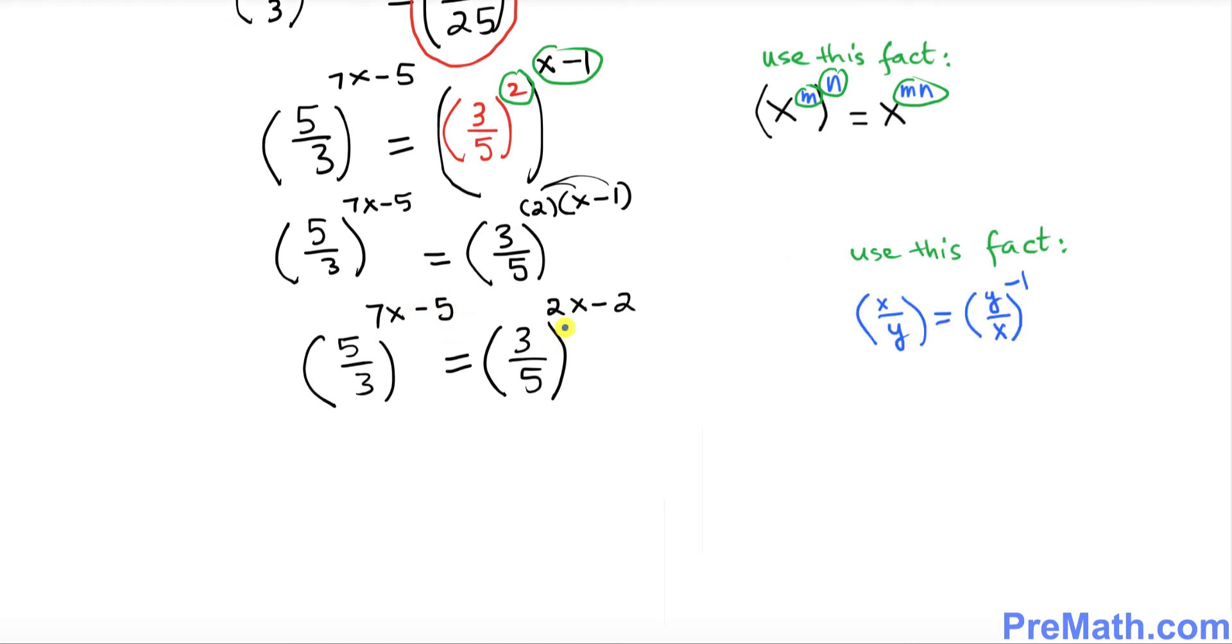Now look at this fraction again. This is 3 over 5. I want to flip it over. Flipping over means you find the reciprocal. If you have x over y and you put it in reciprocal form or flip it over, you put power negative 1. I can write 5 over 3 - the reciprocal - then put a power negative 1, and then we have another exponent 2x minus 2.